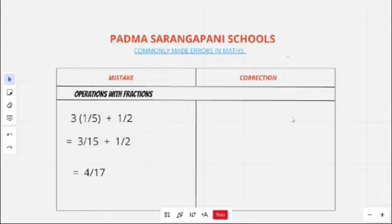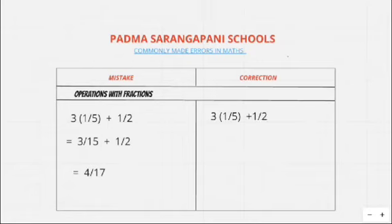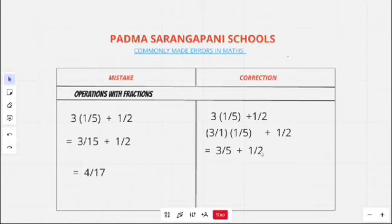According to the rule, the numerator should be multiplied only with the numerator. Considering 3 as the numerator, it is written as 3/1 into (1/5 + 1/2), which equals 3/5 plus 1/2. Taking LCM of 5 and 2, we get a common denominator of 10, and 3 is multiplied by 2 and 1 is multiplied by 5, giving 6 plus 5 over 10, which equals 11/10. This is the correct answer.